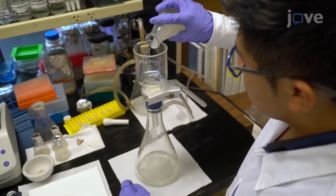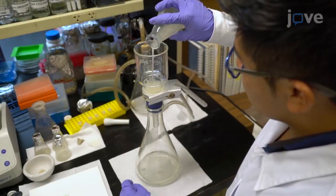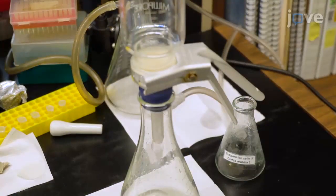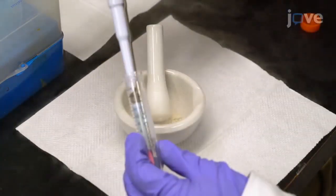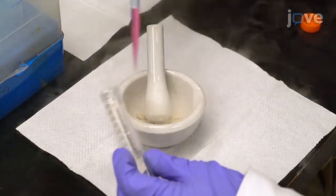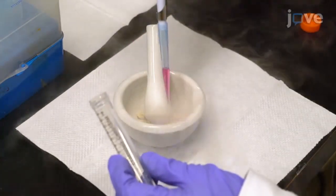Using filter paper, vacuum filter the previously prepared cell suspension. Then, use a porcelain mortar to macerate the cell sample with liquid nitrogen and RNA isolation reagent until it is homogenized.